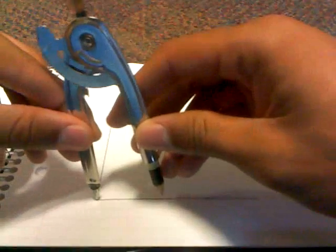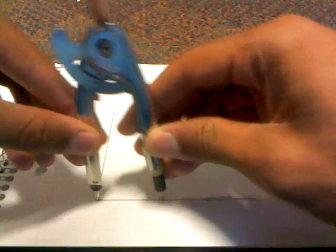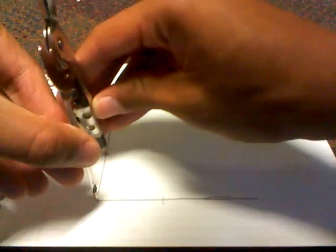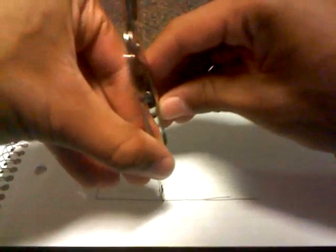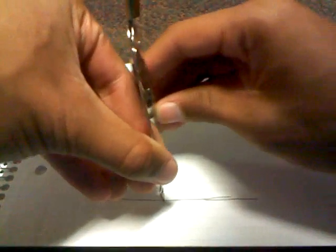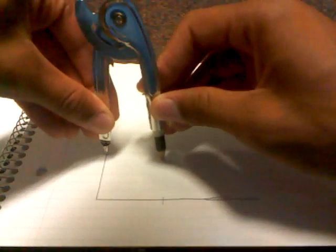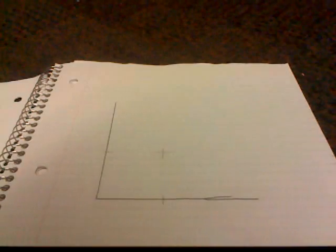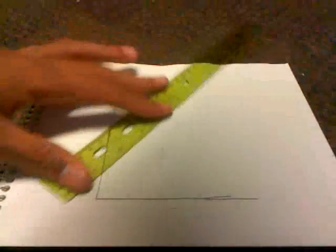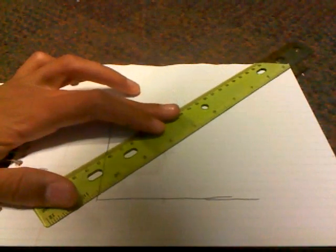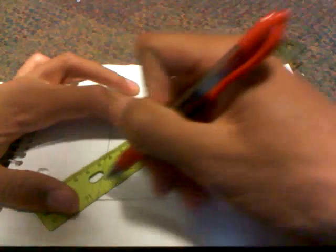What we're going to do is bisect this 90-degree angle, which will give us a 45-degree angle, which will be in red.